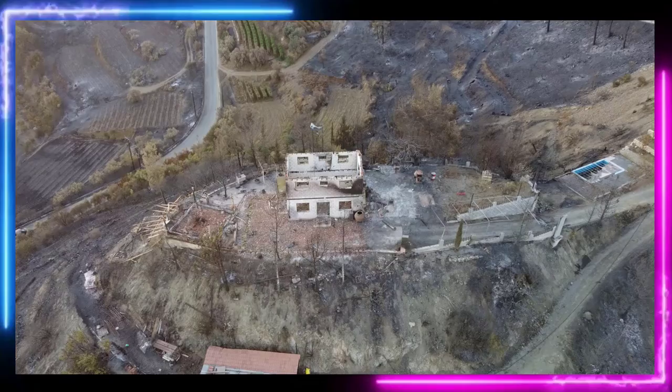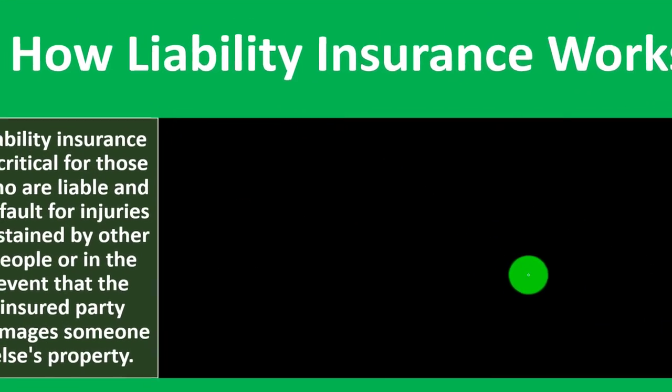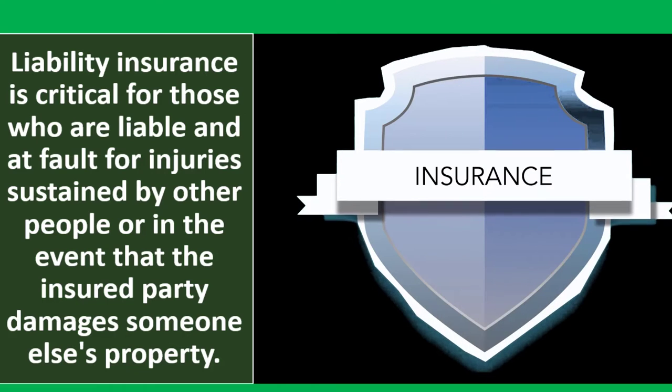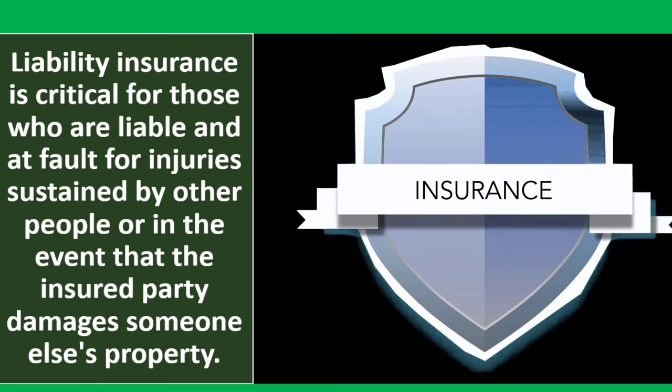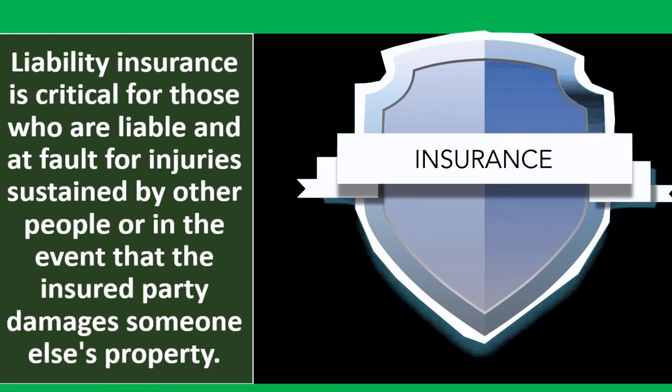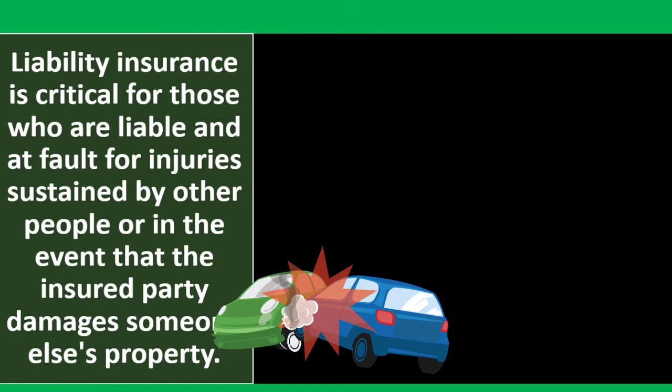How liability insurance works: liability insurance is critical for those who are liable and at fault for injuries sustained by other people, or when the insured party damages someone else's property. You must purchase the insurance before the problem happens. The idea is to do our own mitigation by not being reckless, so that in the event damage does occur, the insurance is there.